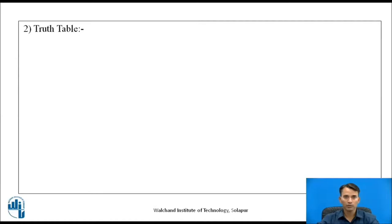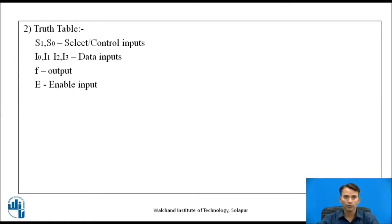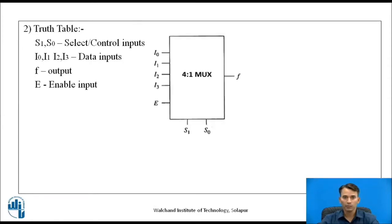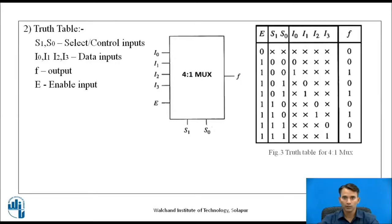The second step is to write a truth table. For the 4-to-1 multiplexer, we have two select inputs s1 and s0, four data inputs i0, i1, i2, i3, output f, and enable input e. In this truth table, the enable input is active high. Whenever the enable input is 0, none of the inputs are selected and output f is 0. When enable input is 1, we consider the four inputs i0, i1, i2, i3 which may be 0 or 1.